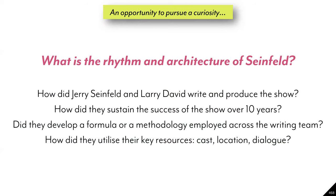Back in 2016, knowing I wanted to pursue a side project, a passion project, the very first curiosity I wrote down was: what is the rhythm and architecture of Seinfeld? I wanted to understand how Jerry Seinfeld and his co-writer Larry David wrote and produced the show — how they sustained success, how they created reproducible results. Did they develop a formula that they could apply across the writing team? And with my natural lens as a football analyst, how did they utilise their resources in terms of cast, locations and dialogue?